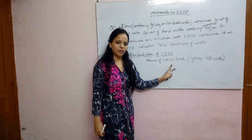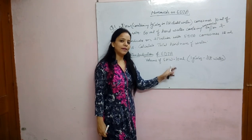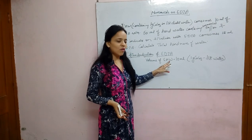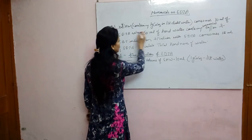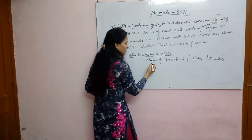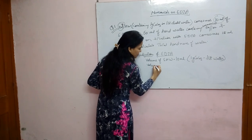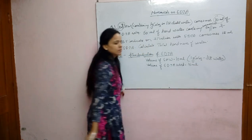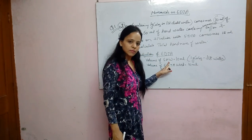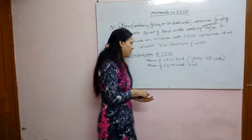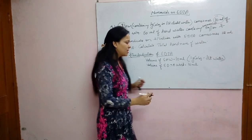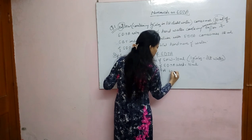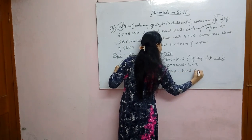For 10 ml of standard hard water, we add ammonical buffer solution and EBT indicator, then titrate with EDTA. The volume of EDTA used for this 10 ml of standard hard water is 10 ml. So we write: 10 ml EDTA is used for 10 ml standard hard water, which was prepared with 1 gram CaCO3 in 1 litre water.